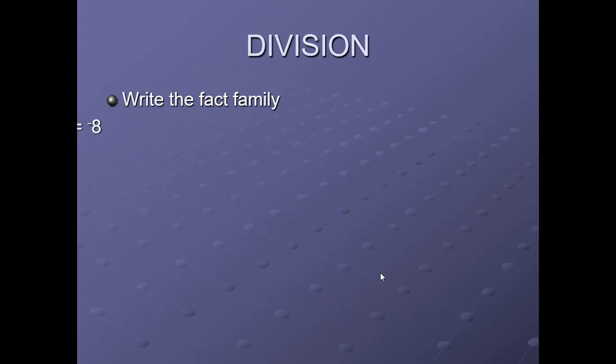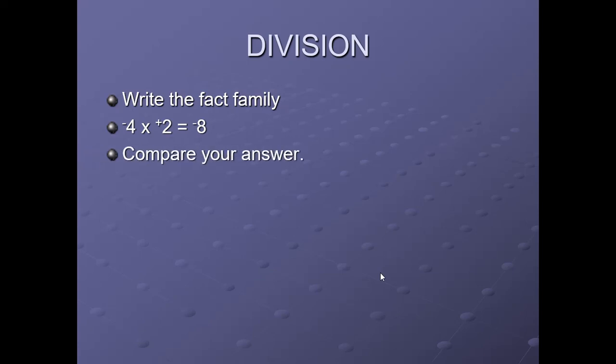Now let us write the fact family for multiplication and division. Minus 4 × plus 2 = minus 8. Plus 2 × minus 4 = minus 8. Minus 8 ÷ 2 = minus 4. Minus 8 ÷ (−4) = plus 2.